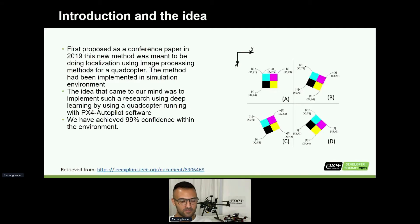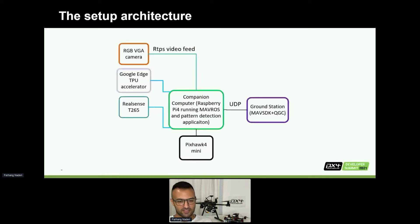Let's see what the system architecture is. There's a companion computer connected to our flight controller. This companion computer, which is Raspberry Pi 4, runs MAVROS as well as the pattern detection application. This is connected to Google TPU accelerator, one simple RGB camera, and also RealSense camera. It uses one PixelHawk 4 Mini and is connected through UDP to the ground station, which is equipped with MAVSDK and QGC. The video feed is consumed by Raspberry Pi for pattern detection algorithm in RTPS format, so everything has to be real-time.